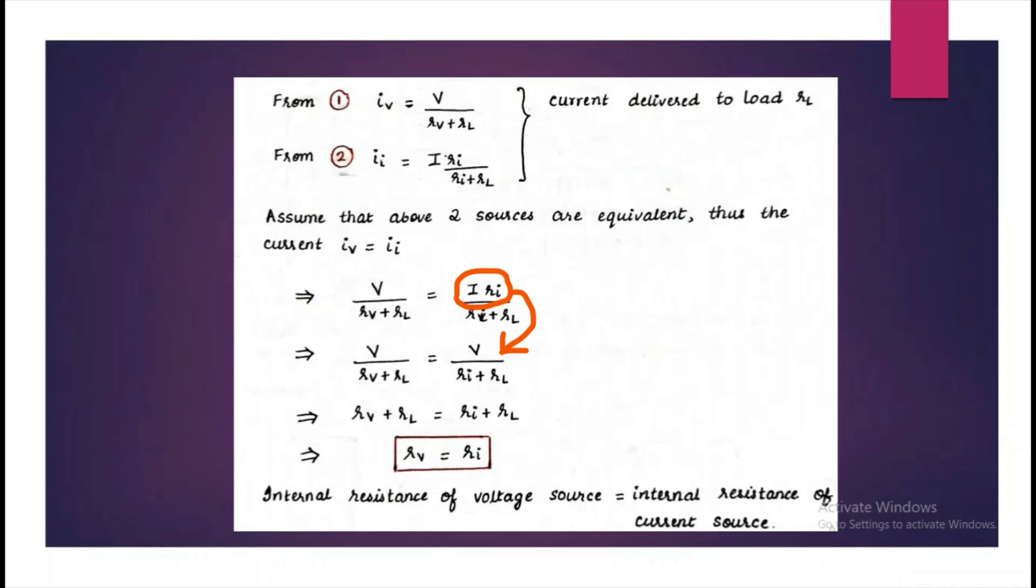Both the V's get cancelled and we get Rv plus RL equals Ri plus RL. Again, RL gets cancelled, so we get Rv equals Ri.